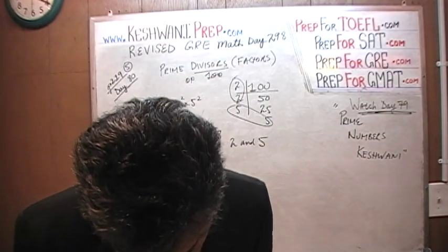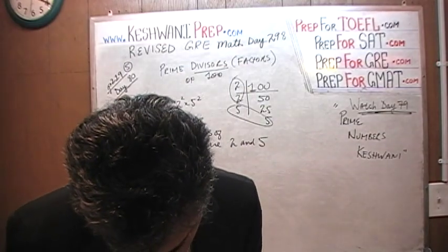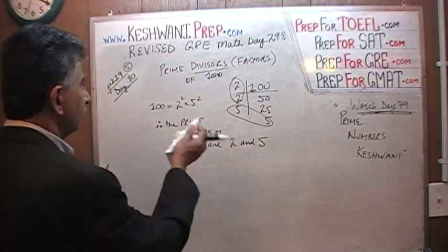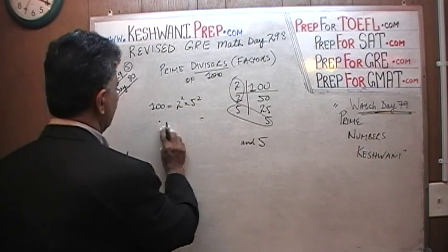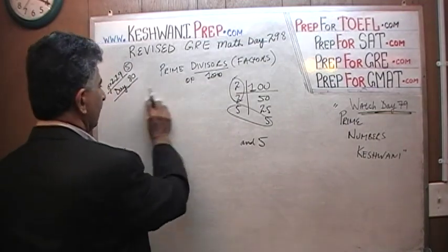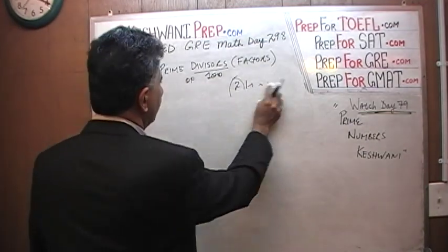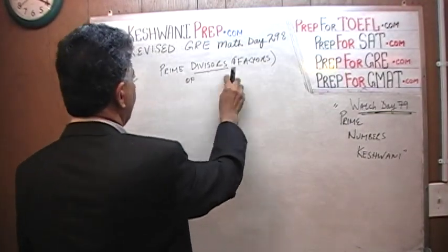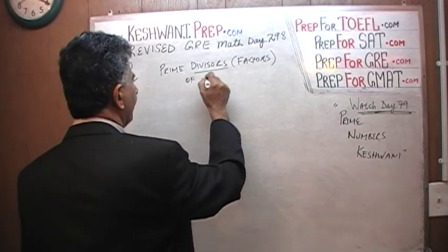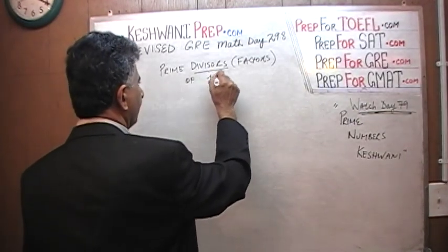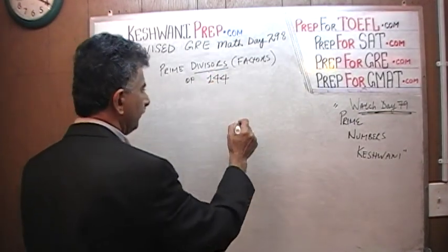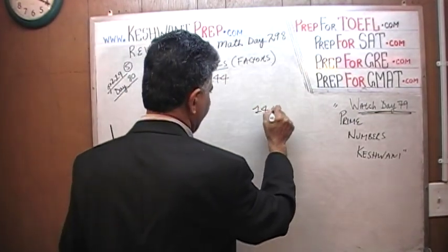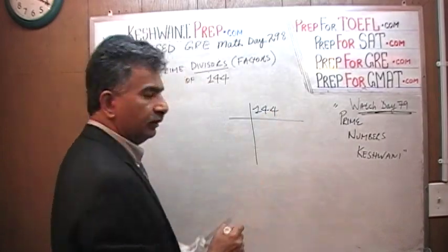Part B: they are asking for the prime divisors of 144. Same exact procedure — nothing is going to change. Now we're looking at 144.